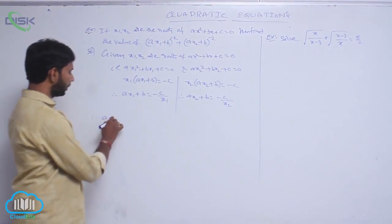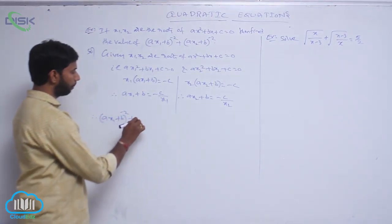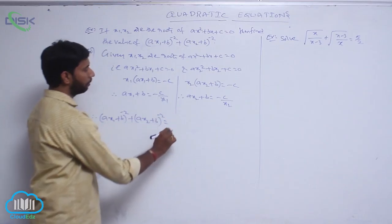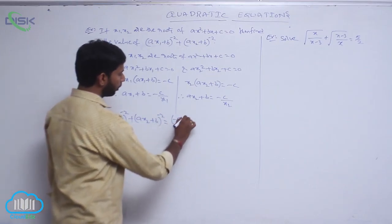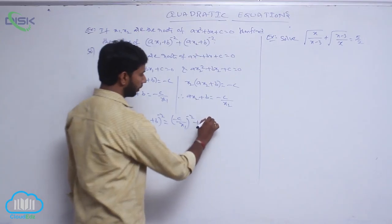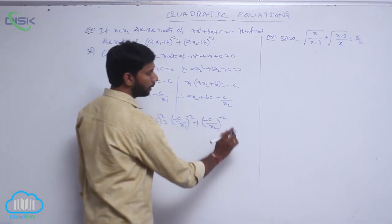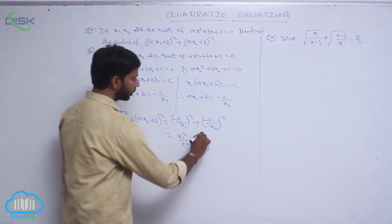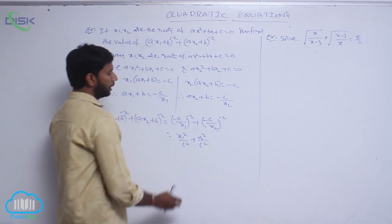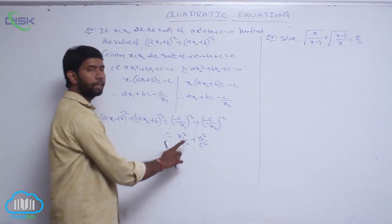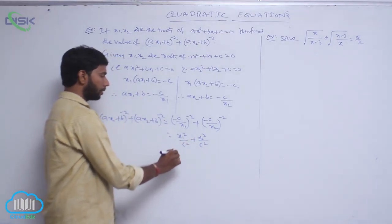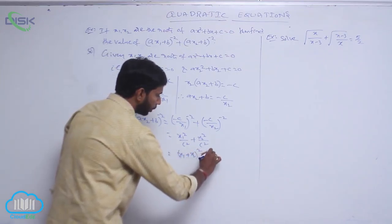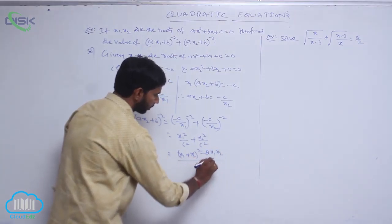Therefore, the required value (ax₁ + b)⁻² + (ax₂ + b)⁻² equals (−c/x₁)⁻² + (−c/x₂)⁻², which is x₁²/c² + x₂²/c². This is of the form α² + β², and a² + b² can be written as (a + b)² − 2ab, giving (x₁² + x₂²)/c², which equals (x₁ + x₂)² − 2x₁x₂, all over c².